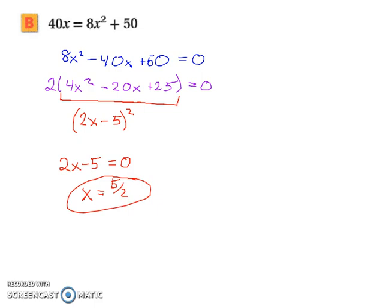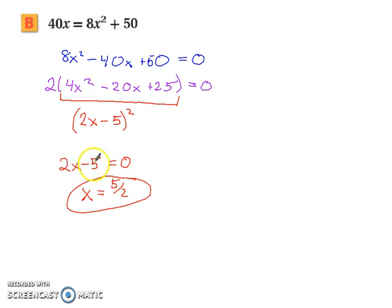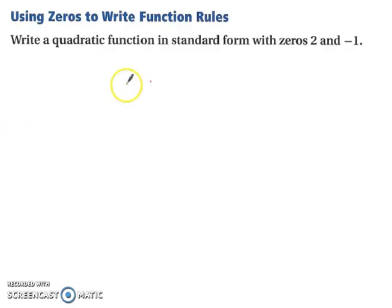Let's try working backwards now. So, using zeros to write function rules. Write a quadratic function in standard form with zeros 2 and negative 1. So, if we recall back when we're trying to find our zeros, we generally start with something. So, we had 2x minus 5 in the previous and we set that equal to 0. Whatever our x was, that's what gave us 0. Well, now you're being given x. What do you have to add or subtract to that x value to make it 0?